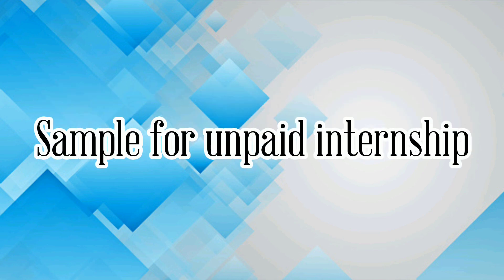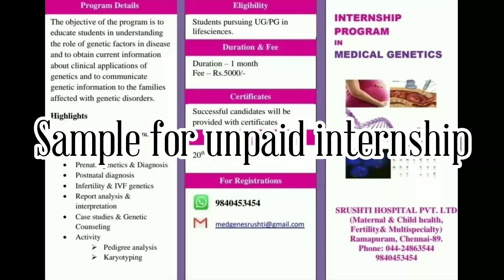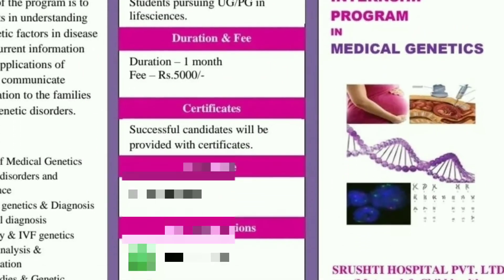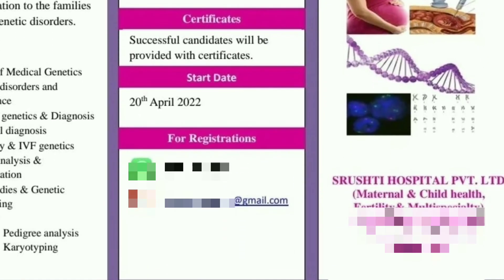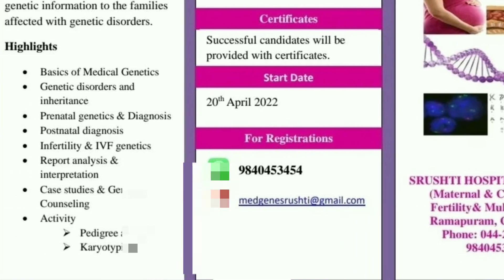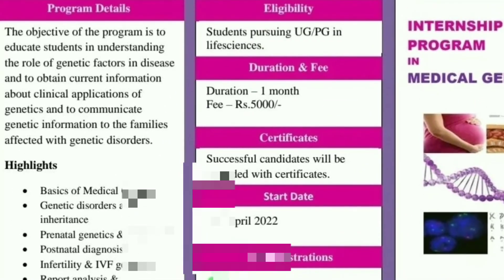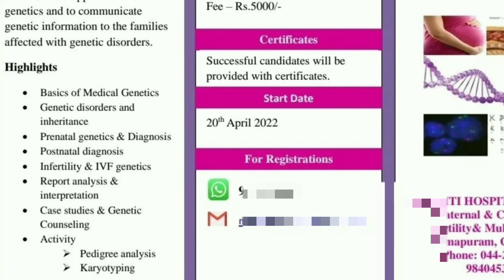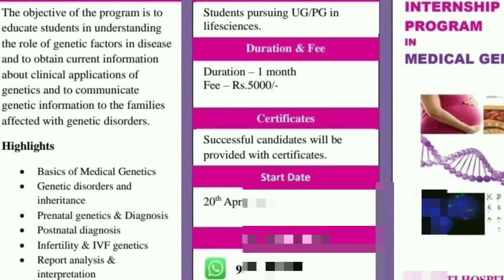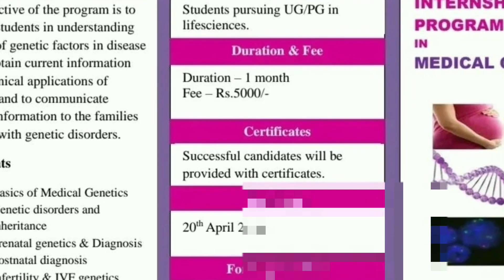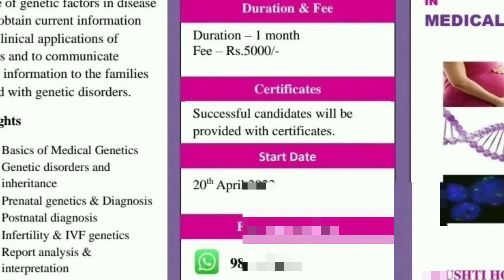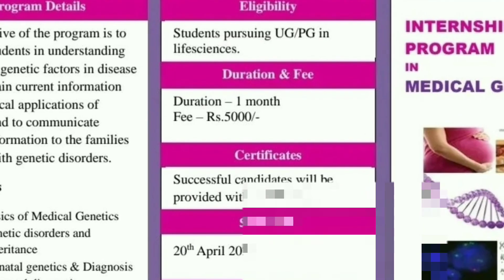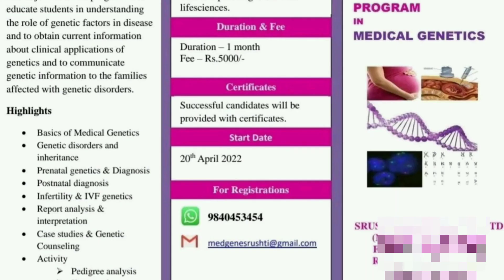Finally, the unpaid internship — you have to pay for the internship. Let's take a sample: in the internship program at a hospital in medical genetics, you will be involved in genetic disorders, genetic information, and how to communicate genetic counseling. Highlights include basics of medical genetics, genetic disorders, inheritance, case studies, genetic counseling, pre-natal diagnosis, infertility and IVF genetics. This is for UG/PG Life Science students. Eligibility: UG/PG Life Science. Duration: 1 month. Fees: you pay. This covers paid internship and unpaid internship.